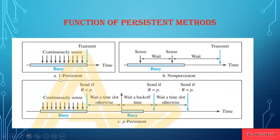Under one-persistent, the channel continuously senses whether it is idle or busy. As soon as it senses that the channel is idle, it starts transmitting the frame immediately — this is 1-persistence. If all stations follow the same approach and transmit as soon as the channel is idle, then transmission of frames at the same time takes place and collision will occur at a higher rate.